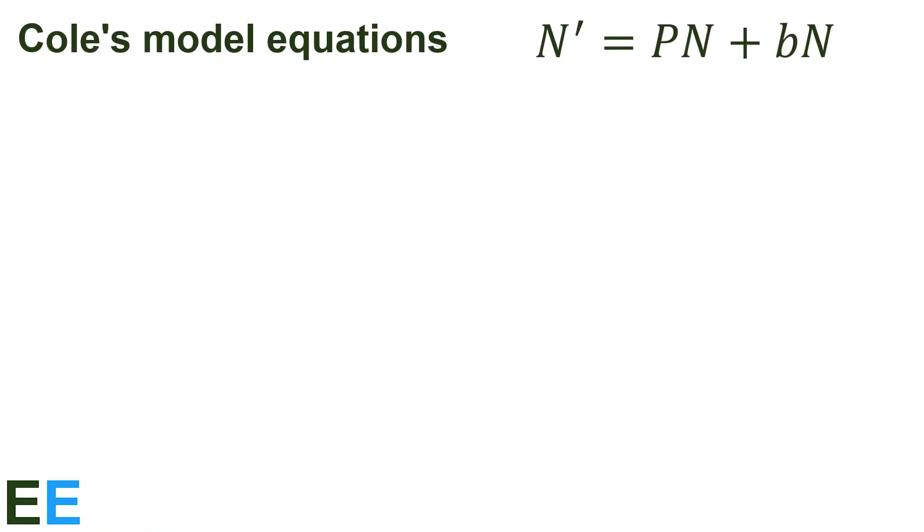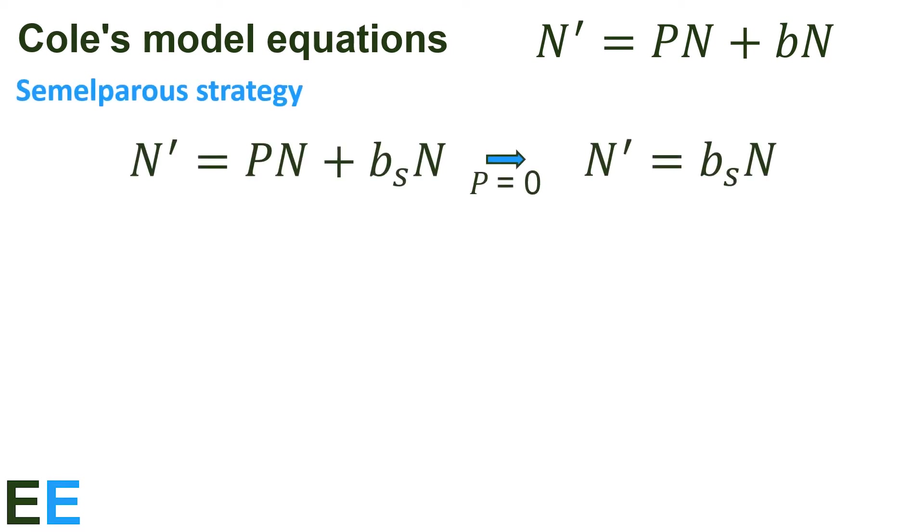Now let's see what our equation looks like for our two life history strategies. First, the semelparous strategy. Note that the birth rate is now represented by B sub s, indicating that this is the birth rate for the semelparous individuals. For semelparous reproduction, the adults only reproduce once, so their survival is essentially zero because they sacrifice themselves or at the very least no longer participate in future reproduction. This means that the p term is zero, which gives us n prime equals B sub s times n.